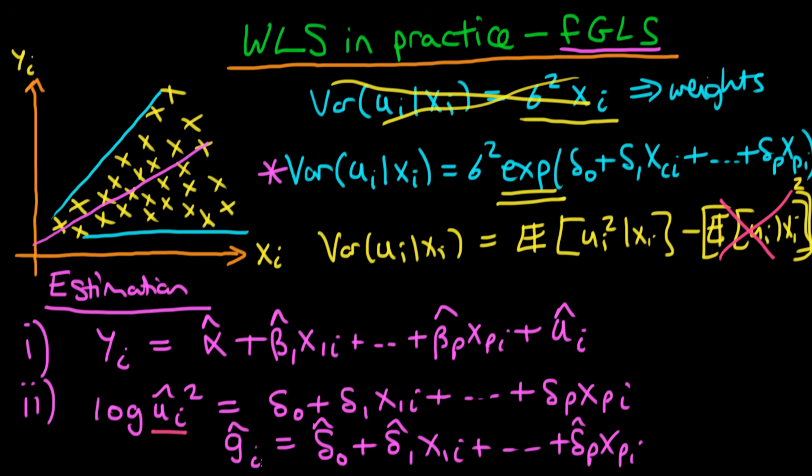That gives us our fitted values from the second regression, and in the next video we're going to talk about how we use those fitted values in order to transform our model into a situation whereby we can do OLS on the transformed system and we would have removed at least a degree of this heteroscedastic disease. I'll see you then.